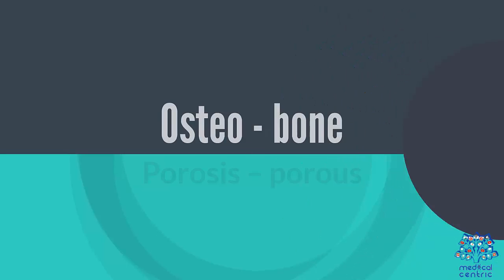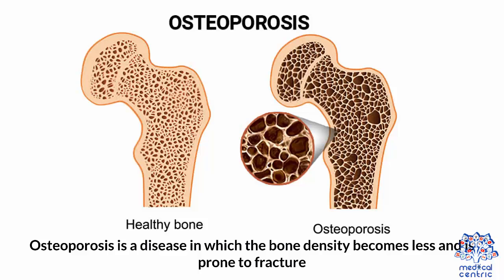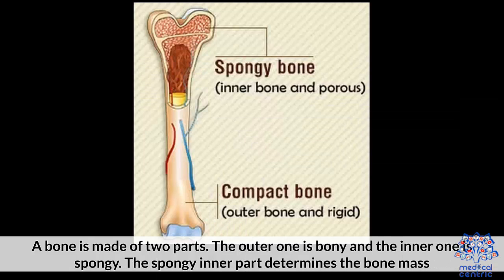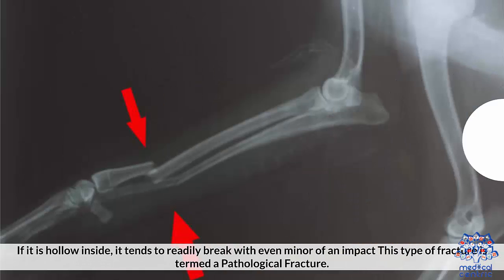Osteoporosis — 'osteo' meaning bone, 'porosis' meaning porous — is a disease in which bone density becomes less and the bone is prone to fracture. A bone is made of two parts: the outer one is bony and the inner one is spongy. The spongy inner part determines the bone mass, and the measurement of your bone density represents your bone strength. If it is hollow inside, it tends to readily break even with a minor impact.